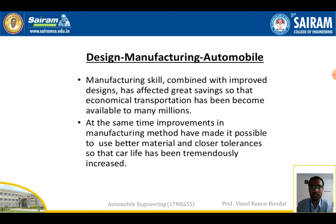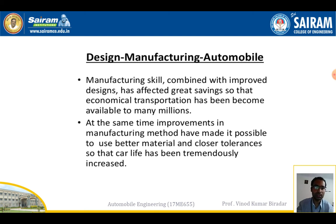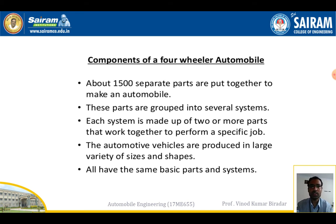New features are constantly being added. Improvements in manufacturing methods have made it possible to use better materials and closer tolerances, so that car life has tremendously increased. Safety features are also being developed. New features include radio, FM, and even small screens or tablets integrated into the vehicle. About 1500 separate parts are put together to make a four-wheel automobile — these are the minimum components for one four-wheel vehicle.